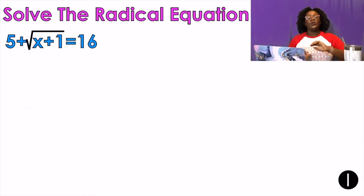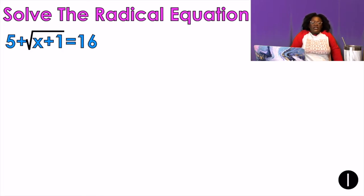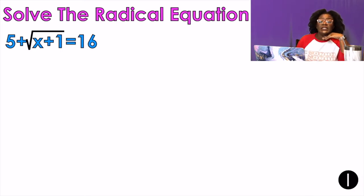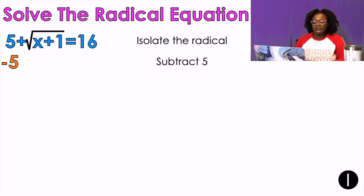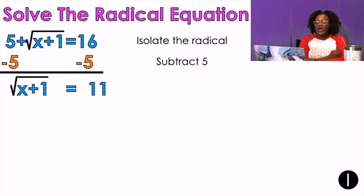Example number one. We have eight examples that we're going to do, and then six try-on-your-own problems. Number one: five plus the square root of x plus one equals 16. First thing is get the radical by itself, so I'm going to move that five because it's in my way. Isolate the radical — subtract five from both sides — and I get the square root of x plus one equals 11, because 16 minus five is 11. I already have the radical by itself.